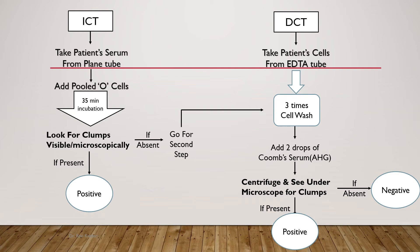For the Indirect Coombs Test, take the serum from a plain tube or plain vacutainer. Add pooled O-cells, then wait for 35 minutes and look for clumps. If clumps are present, it suggests a positive ICT. If absent, proceed to the second step, which is the same as the DCT: three cell washes, two drops of Coombs serum, centrifuge, then look for clumps. Clumps present indicates positive ICT; absent indicates negative ICT.